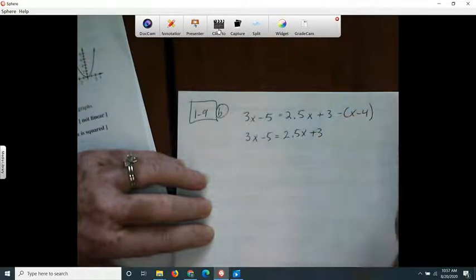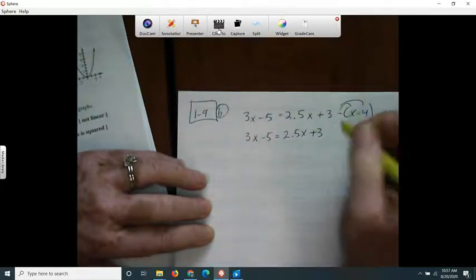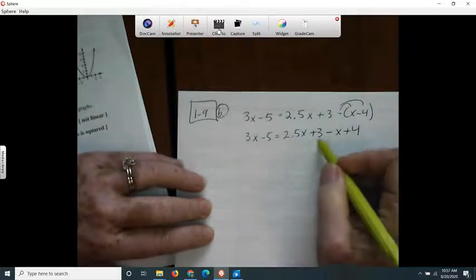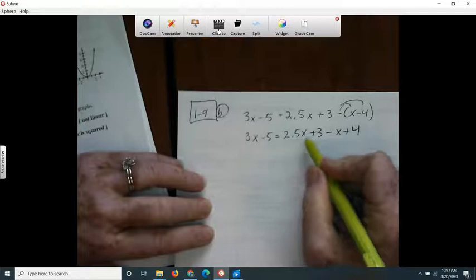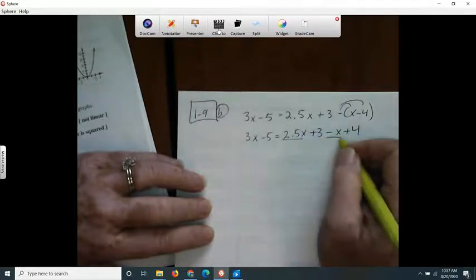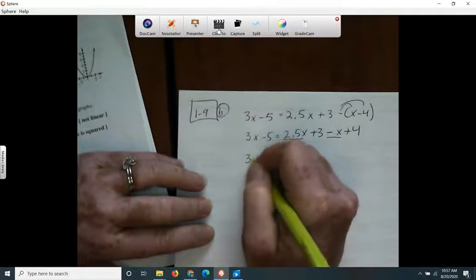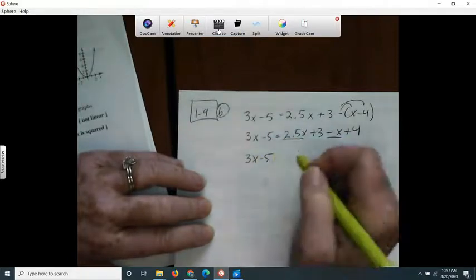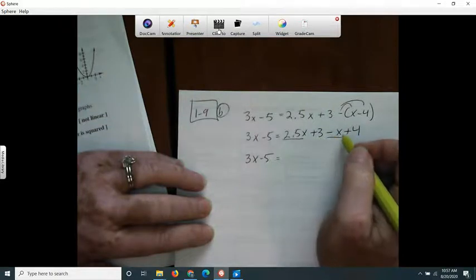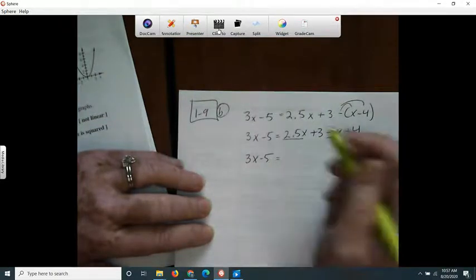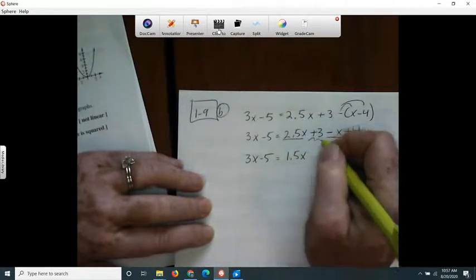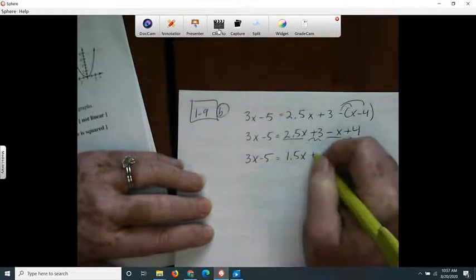I'm going to distribute my negative. And then on the right-hand side, it looks like I should combine my x's together. So 2.5x take away 1x would be 1.5x, and 3 plus 4 is 7.